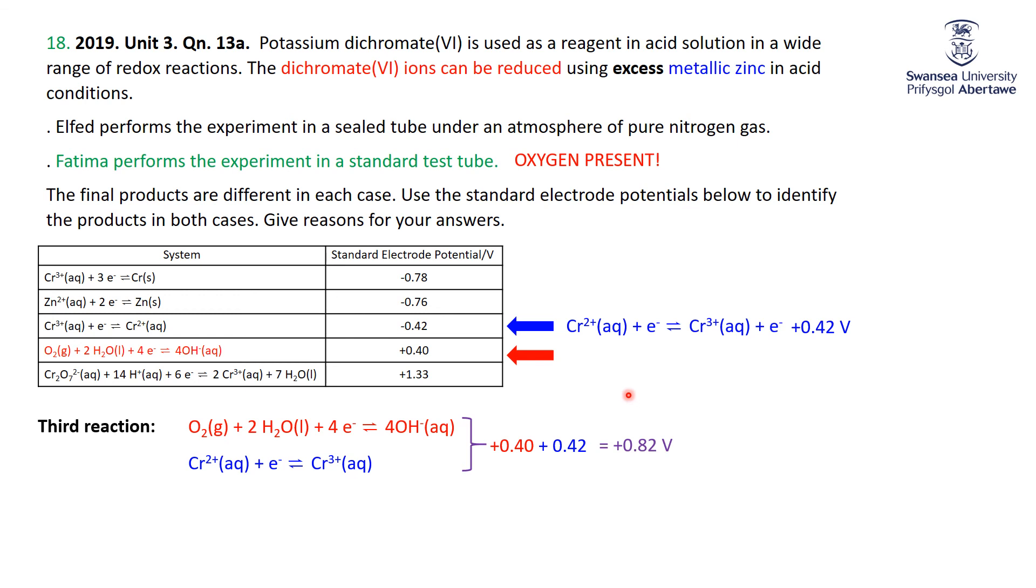And so therefore Fatima will end up making Cr3+. So again, both of them take Cr2O7 2- the dichromate using zinc, making Cr3+. Because you have excess metallic zinc, we can take Cr3+ to Cr2+, and LVED stops there. But then Fatima, having oxygen around in that third reaction, will take the Cr2+ up to Cr3+.